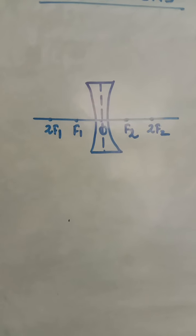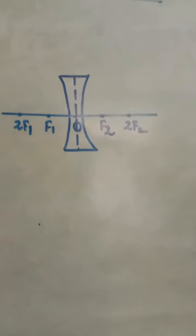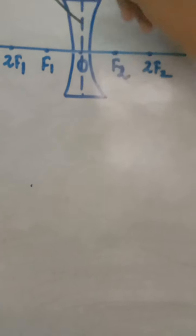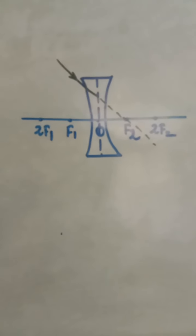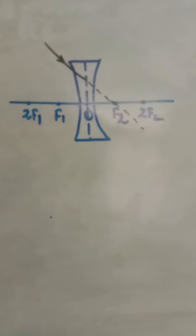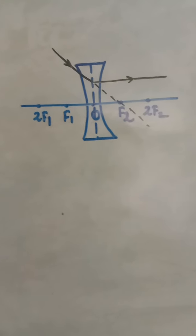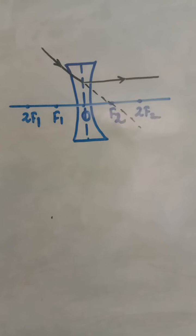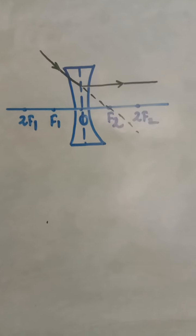Now coming down to rule two of concave lenses. A ray of light which appears to be passing through the focus — so a ray of light which is incident onto the focus of a lens, after hitting the lens, it will become parallel to the principal axis. A ray of light that is directed towards the focus of the lens travels parallel to the principal axis after hitting the lens.